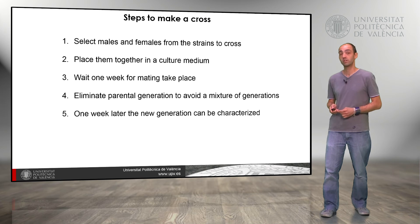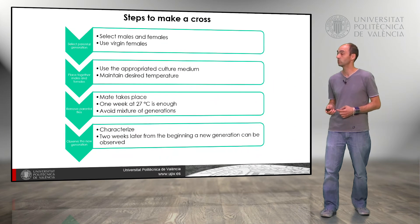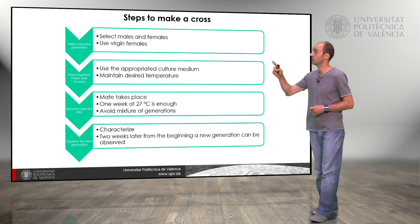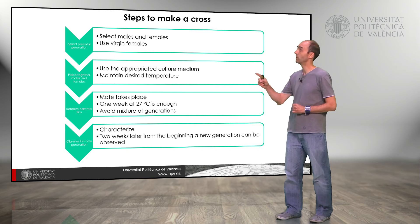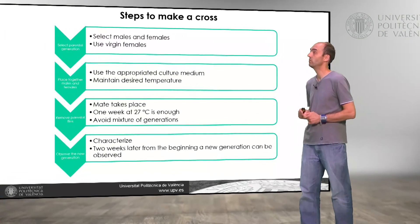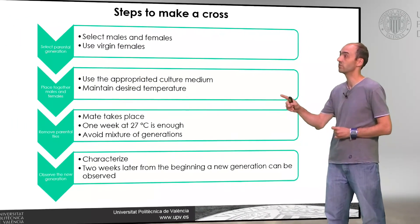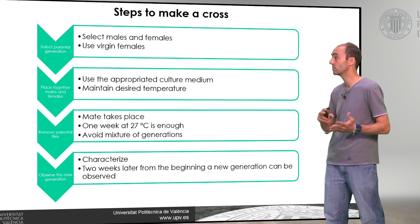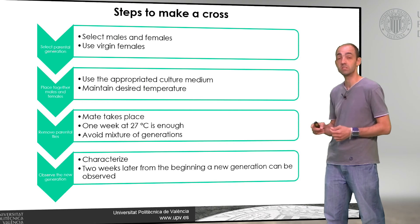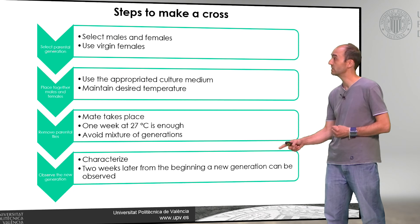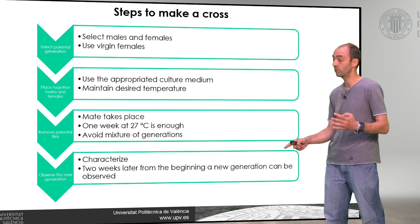One week later the new generation can be characterized. As a summary: the first step is to select males and virgin females. Then set up the appropriate culture medium and maintain the desired temperature. Then let the flies mate, wait one week at 27°C, and avoid mixing generations. The last step is to characterize the flies — two weeks later we have the new generation.